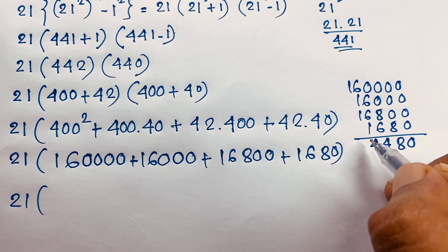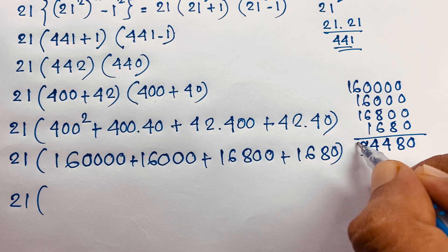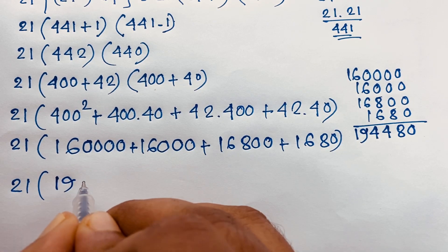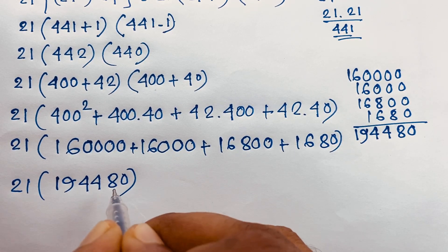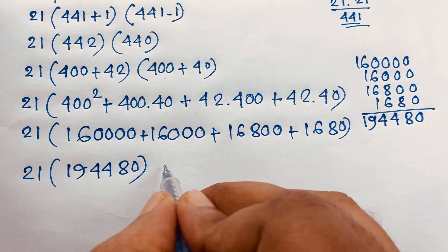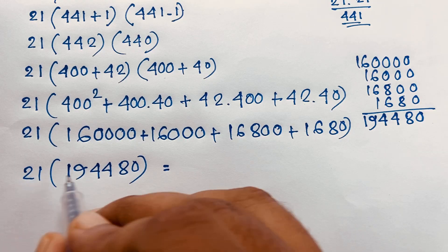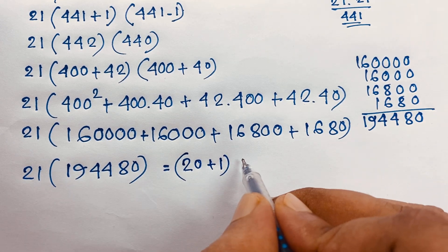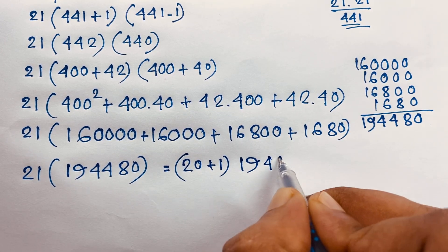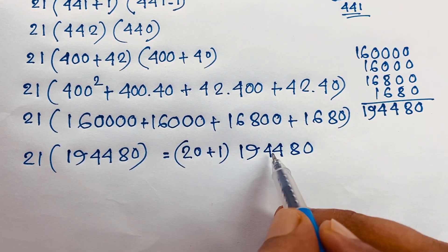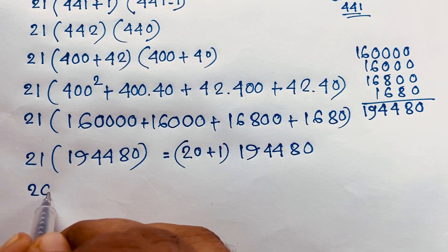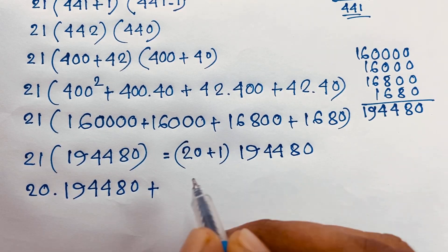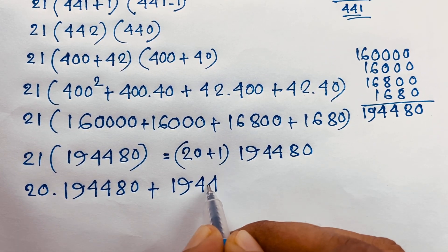Now at this moment, we multiply 21 times 194,480. We write 21 as 20 plus 1. So it becomes 20 times 194,480 plus 1 times 194,480. 20 times 194,480 equals 3,889,600. Adding 194,480 gives us our final total.